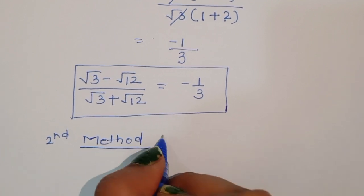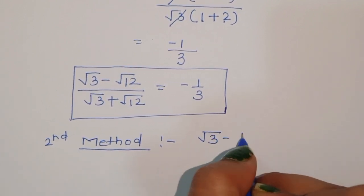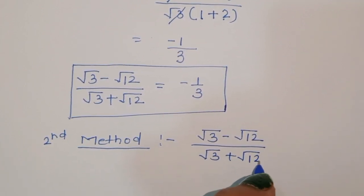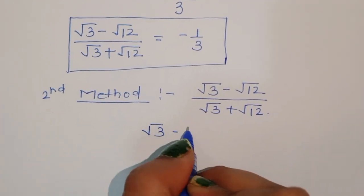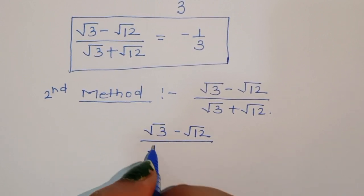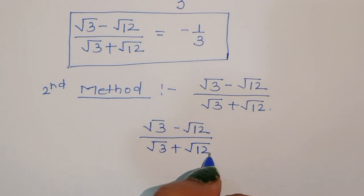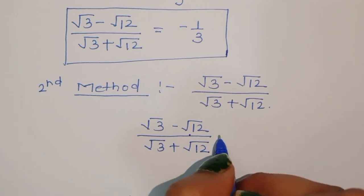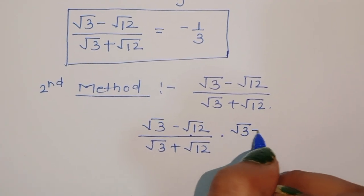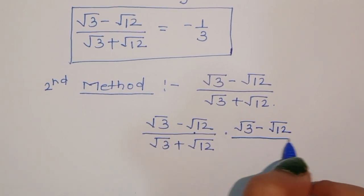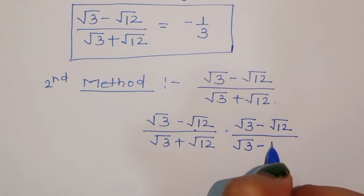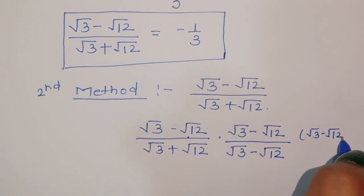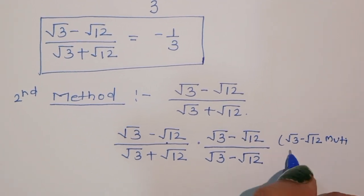Second method: the question is square root of 3 minus square root of 12 divided by square root of 3 plus square root of 12. We multiply both numerator and denominator by square root of 3 minus square root of 12 to rationalize.